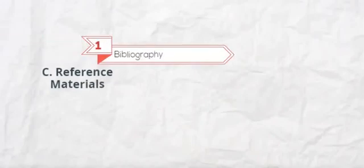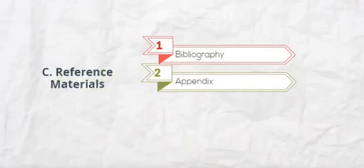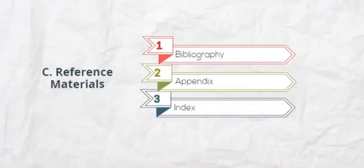C. Reference material. It includes: first, bibliography, it is a list of secondary sources consulted while preparing the report. Second, appendix: it contains information of a subordinate, supplementary, or highly technical nature that researcher does not want to place in the body of the report. Third, index: it acts as a good guide arranged alphabetically about what and where the information is.